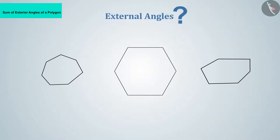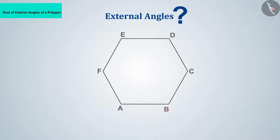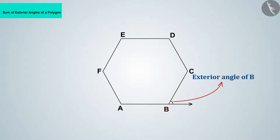What do you understand by the external angles of a polygon? Let us understand this with the help of a hexagon. Moving AB outward, the angle formed between AB and BC outside the polygon is called the exterior angle of B. All external angles of the hexagon are shown in this figure.